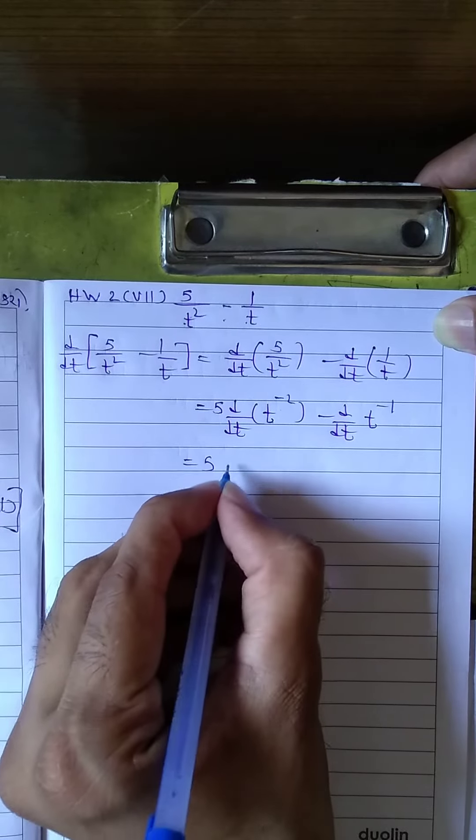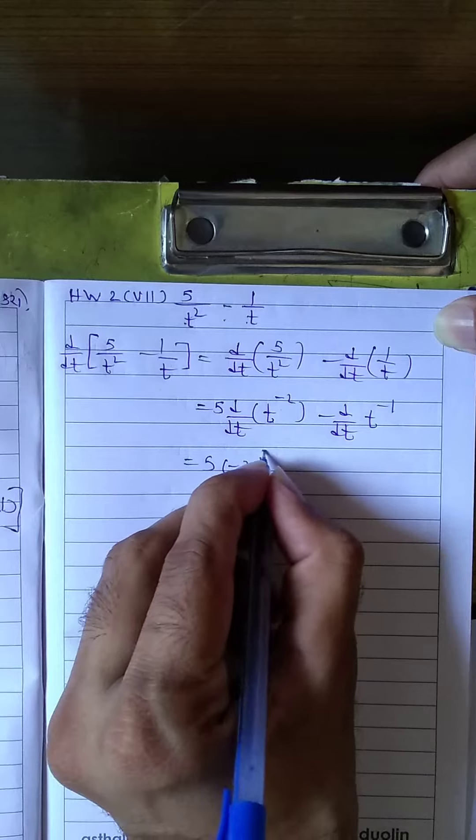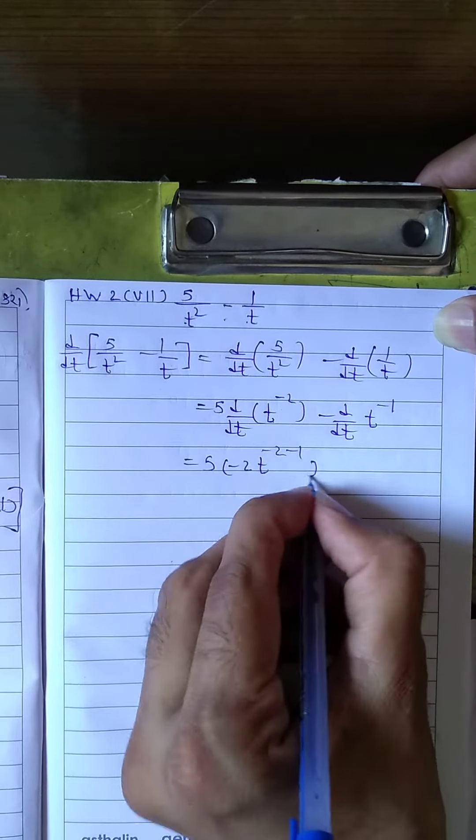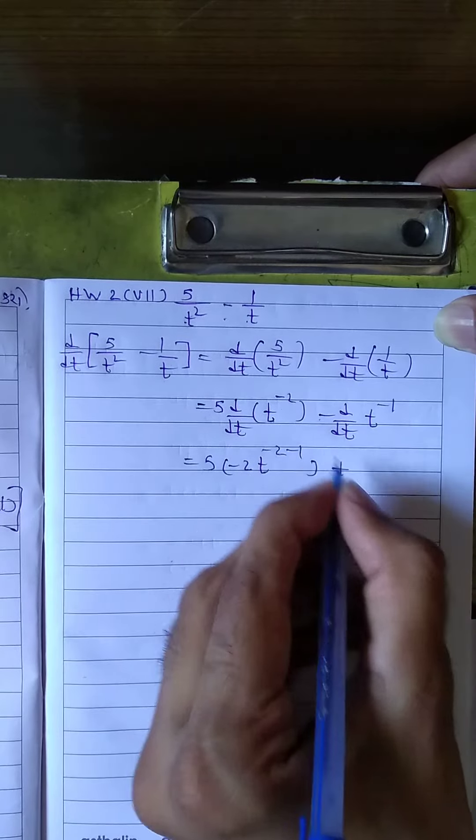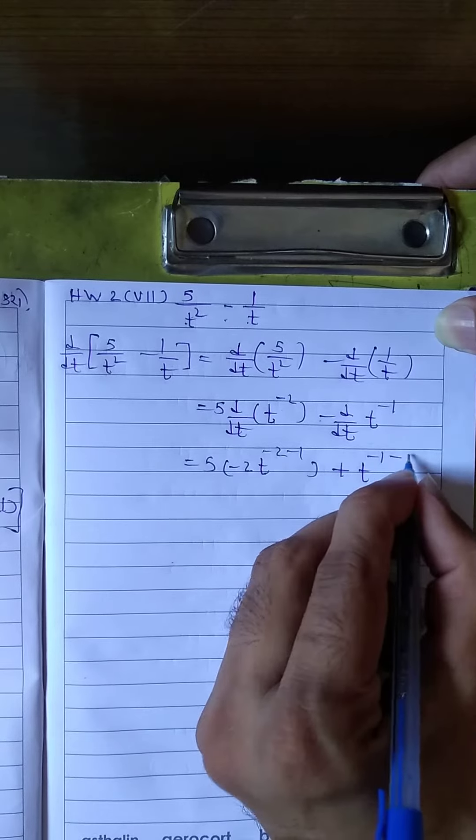When the exponent comes down, we get 5 times minus 2 t raise to minus 2 minus 1. Minus negative becomes plus, giving us t raise to minus 1 minus 1.